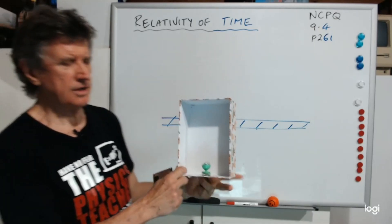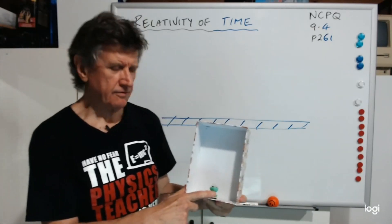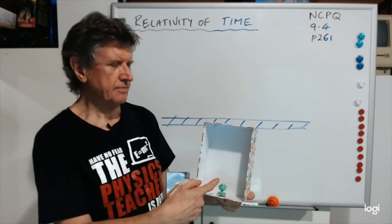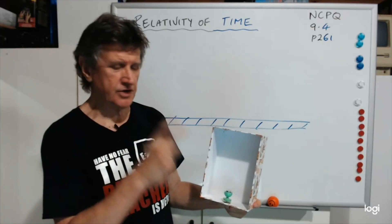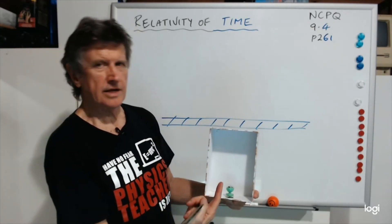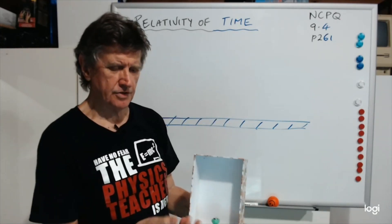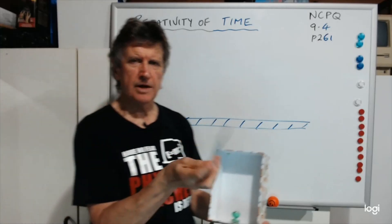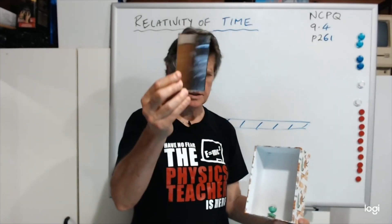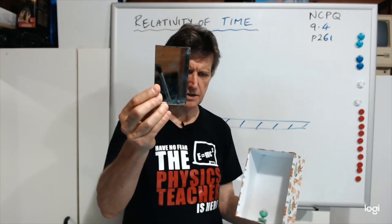Now it's got a light — the same light as before — that gives off light beams in all directions, but we're only interested in the beam that it shoots up. So let's imagine it's a torch that shoots up. Now I'm going to use a mirror — you can see this is a mirror, you can probably see yourselves in it.